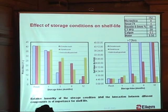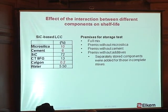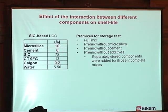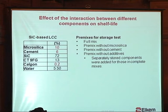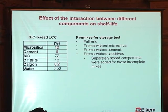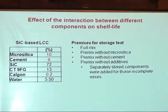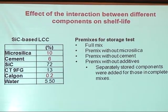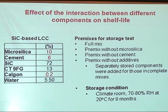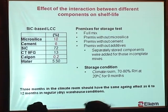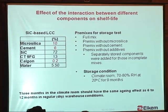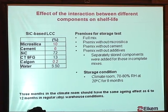To understand the interaction, we designed another experiment using a silicon carbide-based low-cement castable with 10% micro-silica and 6% cement. We made different premixes: full mixes where all ingredients are dry-mixed; a premix without micro-silica, meaning the micro-silica was kept individually in the paper bag; a premix without cement; and a premix without additives. For incomplete premixes, we added the missing component back at testing time. We stored materials in the climate room for nine months. It should be noted that three months in the climate room has the same aging effect as six to twelve months in the warehouse.